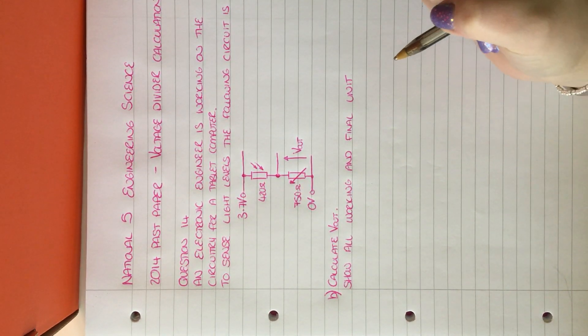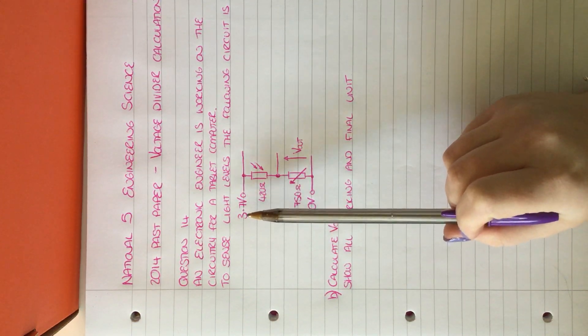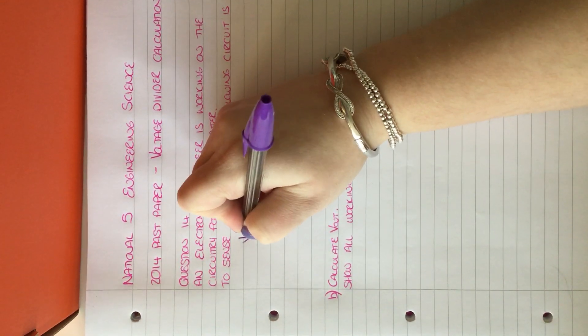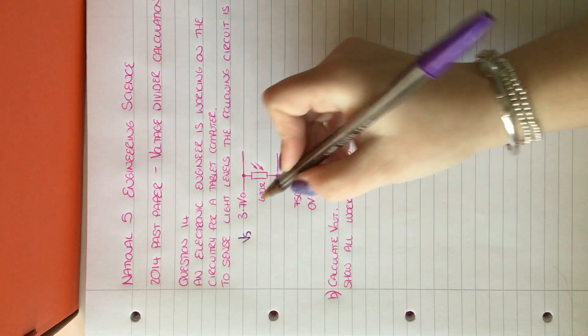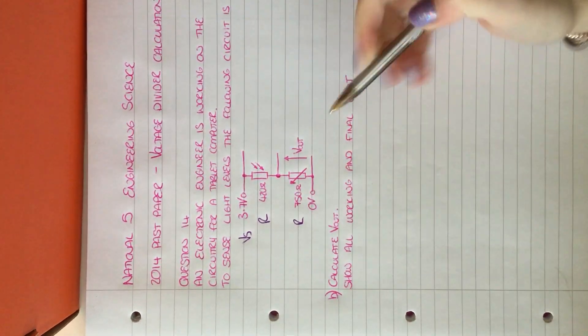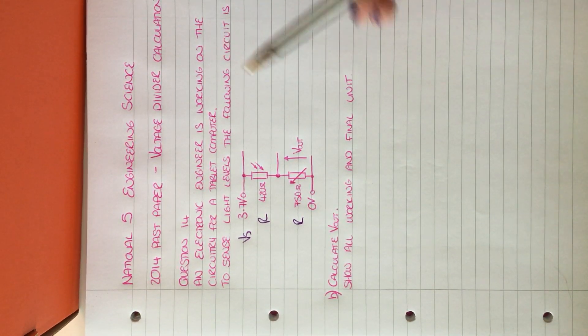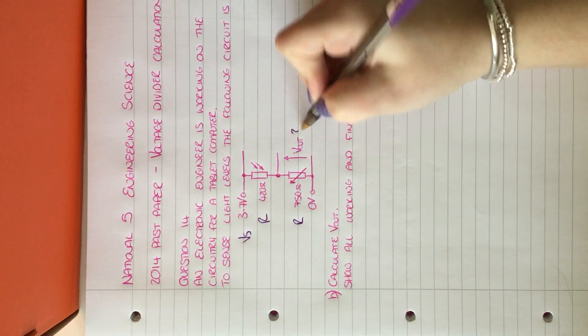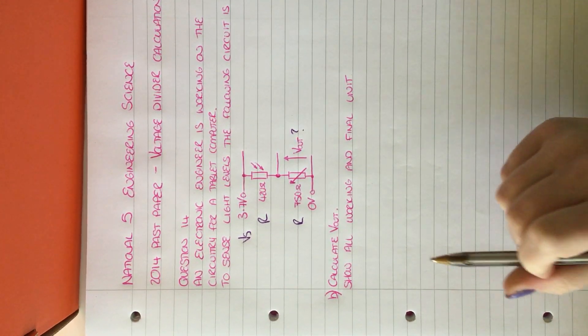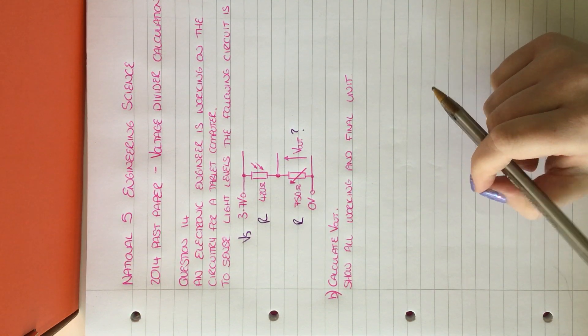When you've got your voltage divider calculation, you need to think about what equation you're going to use. Here we've got the voltage supply, which we can call Vs. We've got two resistors and we've got no voltages on the right hand side. We're asked to calculate V out, which is this one here, which is going to be our question mark. And we need to make sure we show all working and the final unit in this question.